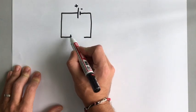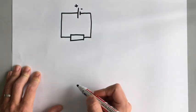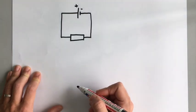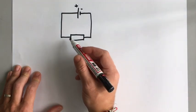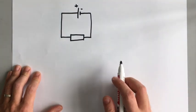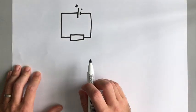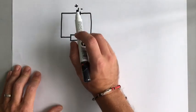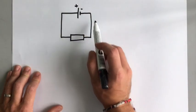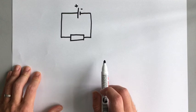The other thing we saw last time is a resistor — a simple resistor, just drawn as a rectangle like that.